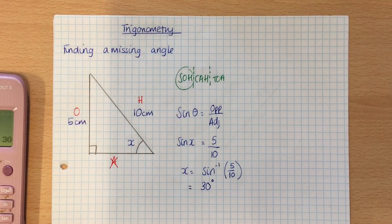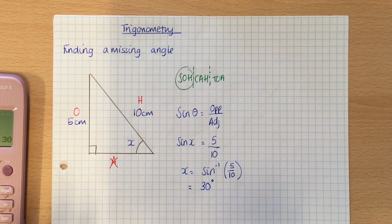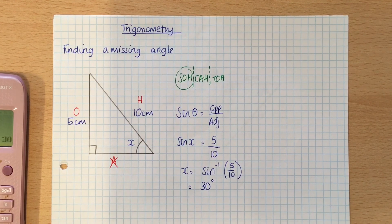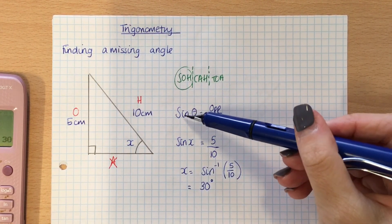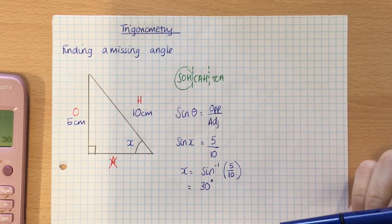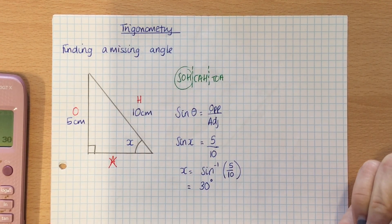It's the same for any part of SOHCAHTOA, so if we're using COA or TOA, it would be exactly the same method, except you would have COS here or TAN here. It works exactly the same way.